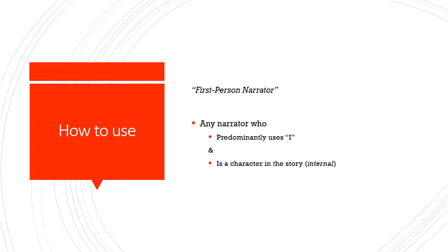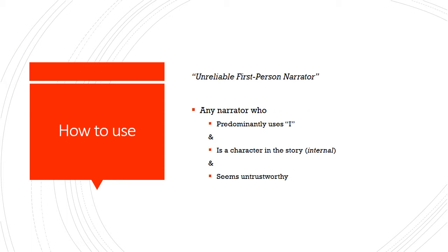How do you use these terms? You would call a narrator a first-person narrator if they predominantly use 'I' and are a character in the story — internal to the story. You might also call a first-person narrator unreliable if they predominantly use 'I' and are a character in the story, but for some reason seem untrustworthy — maybe they are lying, maybe they're a criminal, maybe they don't know certain things and are guessing. For various reasons, the first-person narrator seems unreliable, like they're not telling you the entire truth.